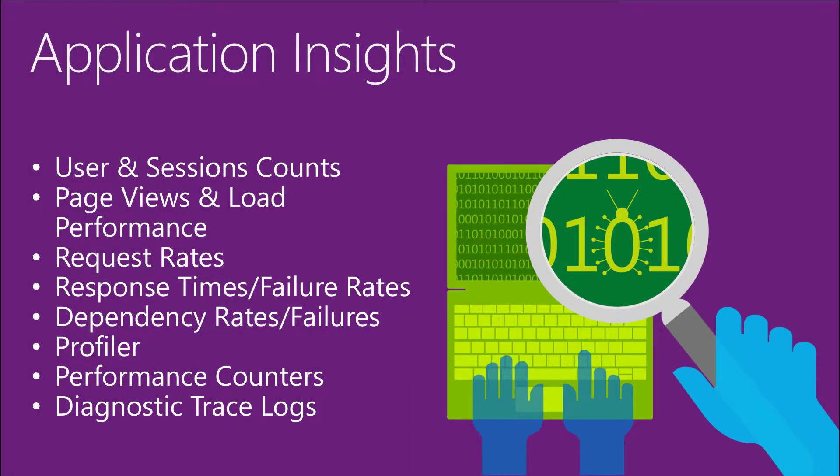Application Insights monitors a wide range of KPIs. For example, user and session counts — being able to monitor where users are coming from and track them based on geolocation. What browser are they using? Firefox, Chrome, Internet Explorer? What version of Windows or Linux? Are they coming from a mobile environment — Android or iOS? We can generate page views and load performance reported by the user's browser.